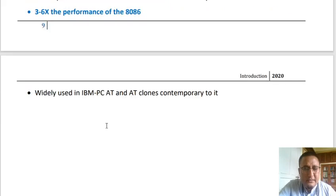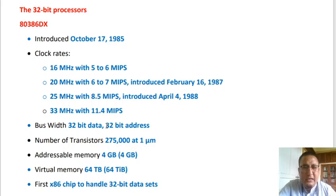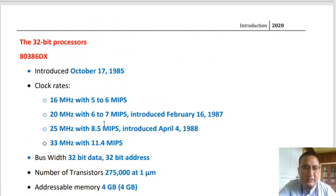Moving to 32-bit microprocessors, the first is the Intel 80386DX, introduced on October 17, 1985, in versions: 16 MHz with 5.26 MIPS, 20 MHz with 6–7 MIPS, 25 MHz with 8.5 MIPS, and 33 MHz with 11.4 MIPS. The bus width was 32-bit for both data and address. It had 275,000 transistors at 1 micrometer, addressable memory of 4 GB, and virtual memory of 64 TB. It was the first generation of the x86 processor family to handle 32-bit data.